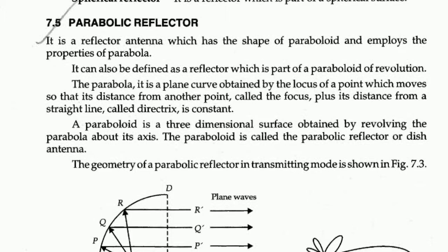To overcome the drawback of poor directivity in other reflector types, curved-shape reflector plates are used — these may be hyperbola or parabola. The hyperbola is used in dual-mode reflectors. In the basic construction of a parabolic reflector, there is one parabolic surface and a feed point or focal point at a distance from the center. Waves from the feed point incident on the reflector plate are reflected into space with a planar wavefront, which improves directivity.